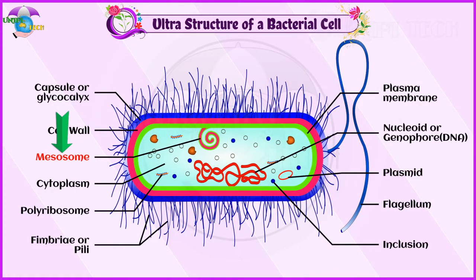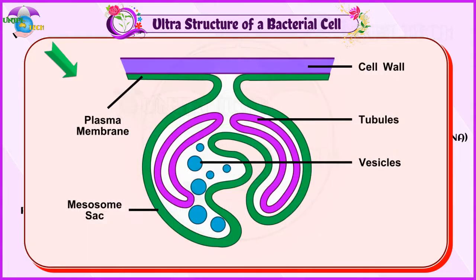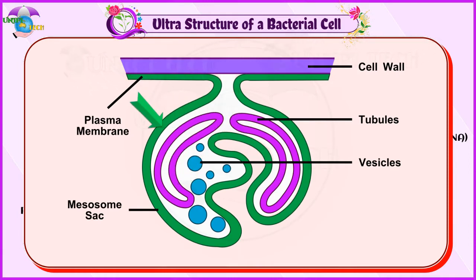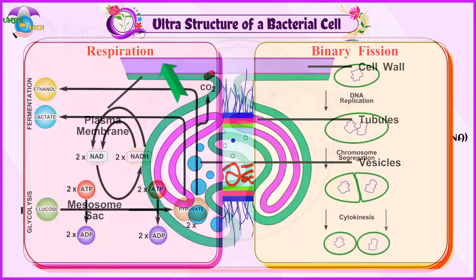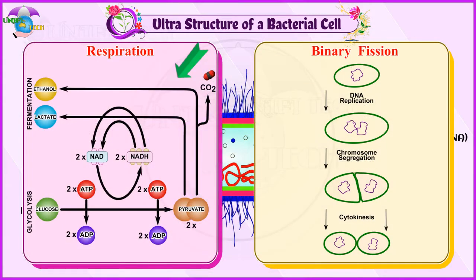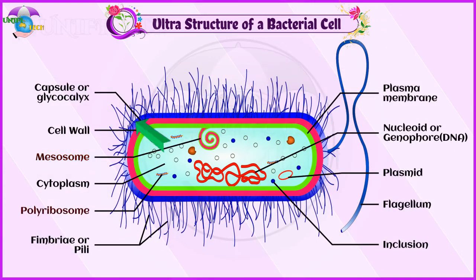Mesosomes: These are localized infoldings of the plasma membrane produced into the cell in the form of vesicles, tubules, and lamellae. They are folded together to maximize their surface area and help in respiration and binary fission.